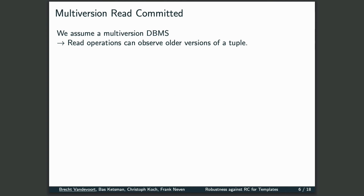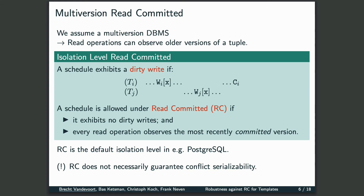For our definition of Read Committed, we assume a multiversion database, implying that read operations can observe older versions of a tuple. A schedule is allowed under Read Committed if it exhibits no dirty writes, and every read operation observes the most recently committed version, thereby ignoring possibly uncommitted changes. Read Committed is the default isolation level in some major database implementations, including Postgres. It is important to realize that Read Committed does not necessarily guarantee conflict-serializability.